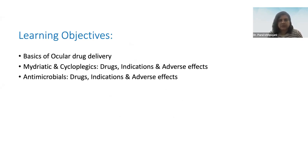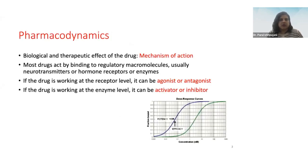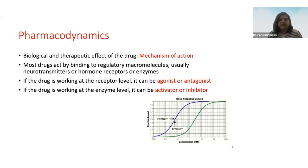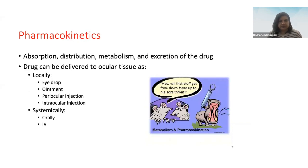You have all studied pharmacology and are aware that for any drug we need to know the biological and therapeutic effect — the mechanism of action. Most drugs act either by binding to regulatory macromolecules such as neurotransmitter or hormonal receptors, or enzymes. If the drug works at the receptor level, it can be an agonist or antagonist. If at the enzyme level, it can be an activator or inhibitor. Pharmacokinetics covers absorption, distribution, metabolism, and excretion.